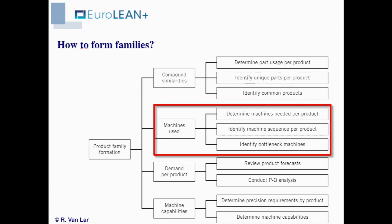A second criterion, which is very often used, is to look at the machines used to produce the products within the family. For each product we look at which processes are needed and which machines are needed to perform these processes. We also look at the sequence, and once we have a grouping we should identify which machine is the bottleneck.